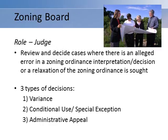A community that has a zoning ordinance is required to appoint a zoning board of adjustment or zoning board of appeals. The zoning board is generally assigned three different types of decisions: variances, conditional uses, and administrative appeals. Zoning board members are considered independent, quasi-judicial decision makers, meaning they review the facts of each case and weigh those facts against standards found in state statutes, case law, and local ordinances.